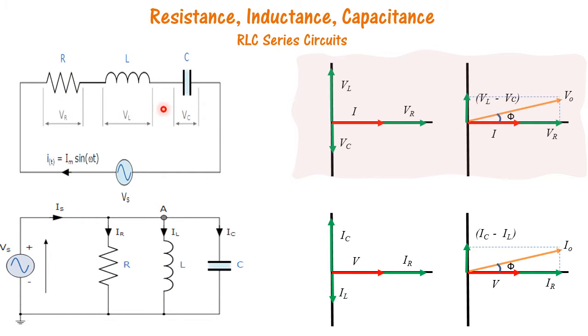In a series circuit, since current is the same in the circuit, we use current as a reference. We have VL minus VC as one vector and VR as another vector which we add to get V0.